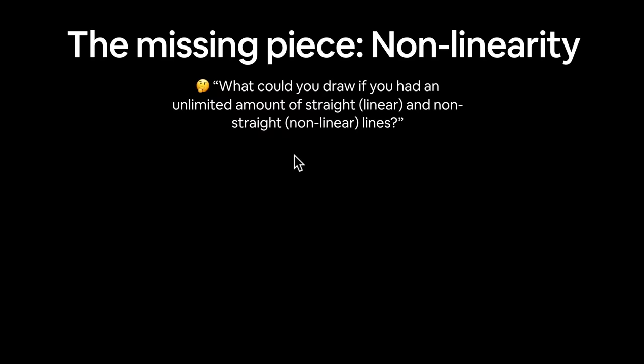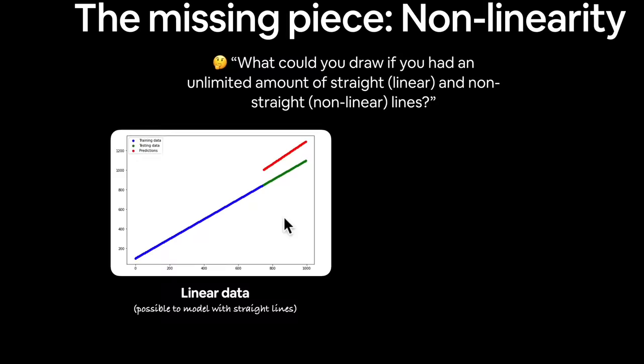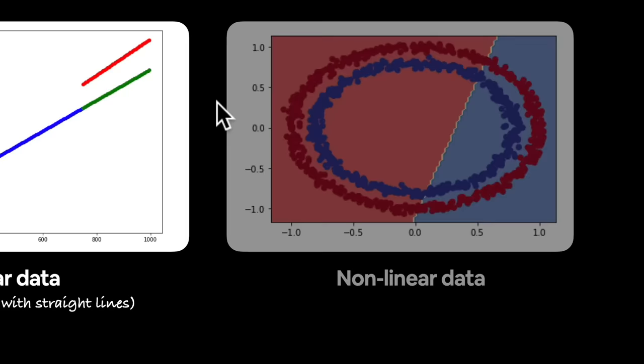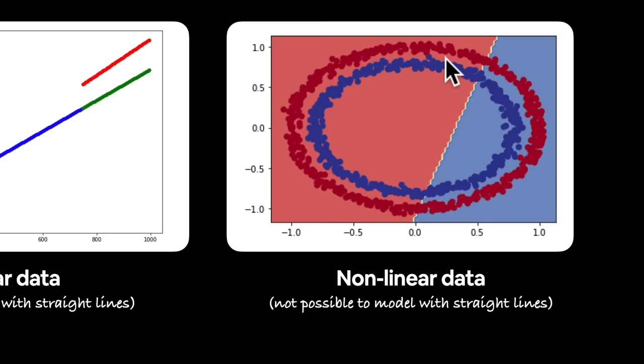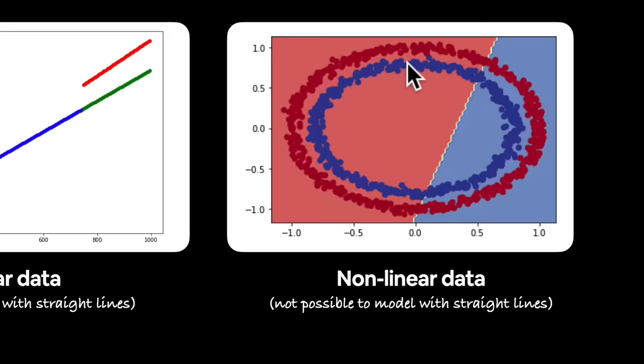Let's look at our data again. We have some linear data — possible to model with straight lines. And then we have some non-linear data — not possible to model with straight lines alone. You could argue that drawing really small straight lines could work, but let's assume we need both straight and non-straight lines to draw the patterns we need.